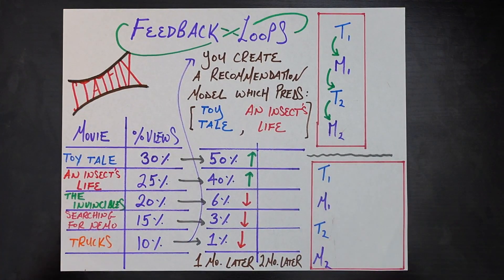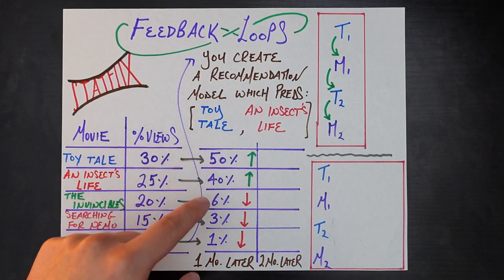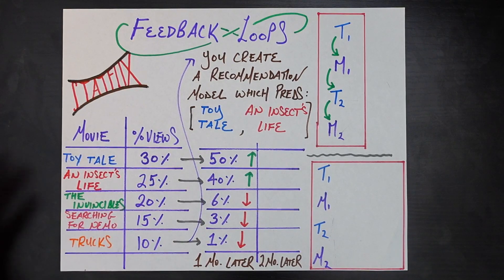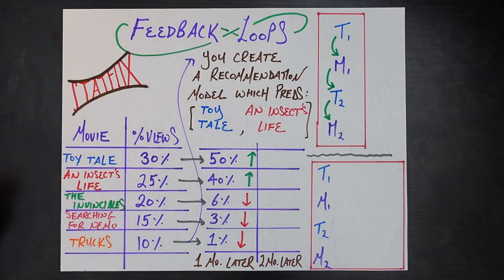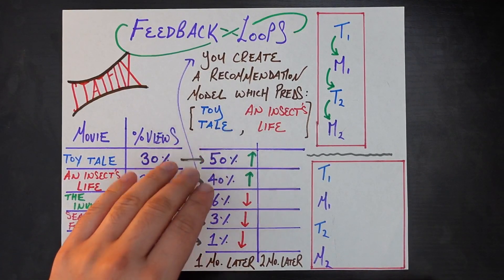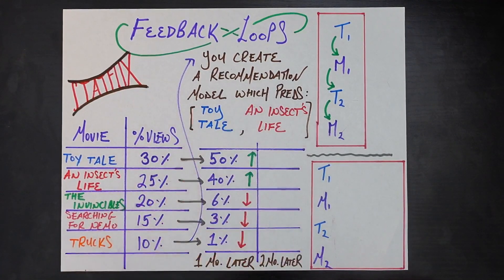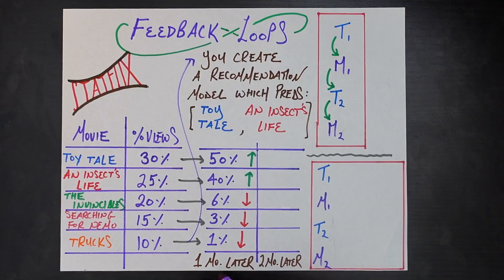So we're going to have our next recommendation model prioritize those even more — push them even harder than before — because these numbers are relatively higher than they even were before. We're going to say users should get recommended Toy Tale and An Insects Life because they're even more popular and have an even higher percent of views than they had in the first place.